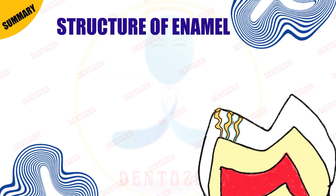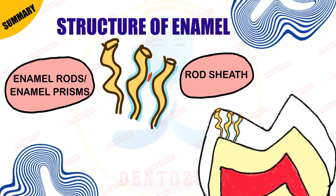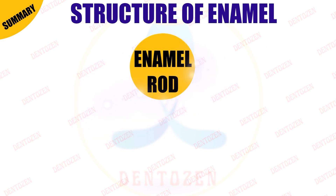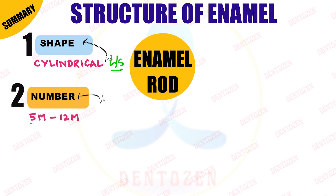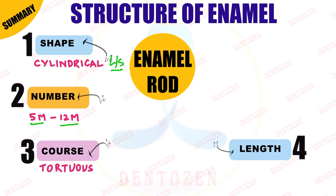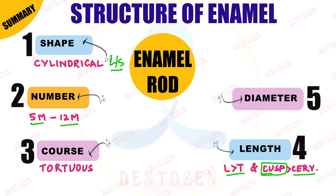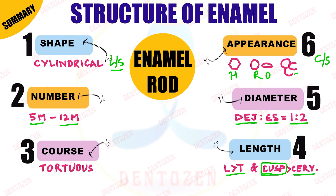To quickly summarize: enamel rods, also known as enamel prisms, have interrod enamel in between them and rod sheath surrounding them. Their shape is cylindrical in longitudinal section. Number varies from 5 million in lower laterals to 12 million in upper molars. They run a tortuous, wavy, or sinusoidal course. Length is more than the thickness of enamel, with cuspal rods longer than cervical rods. Diameter increases from dentino-enamel junction to enamel surface in a ratio of 1:2. Their cross-section appearance can be hexagonal, round, oval, fish scale, arcade, or keyhole.